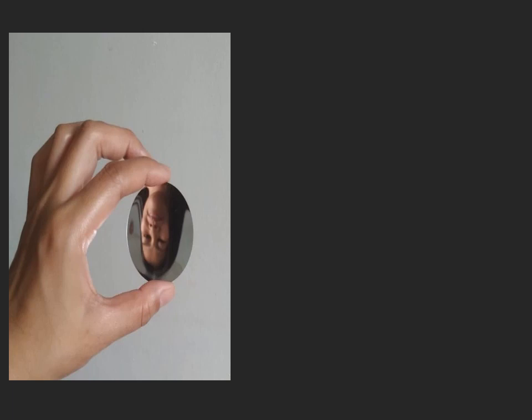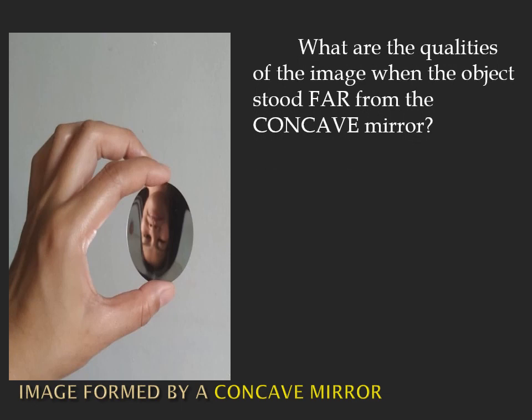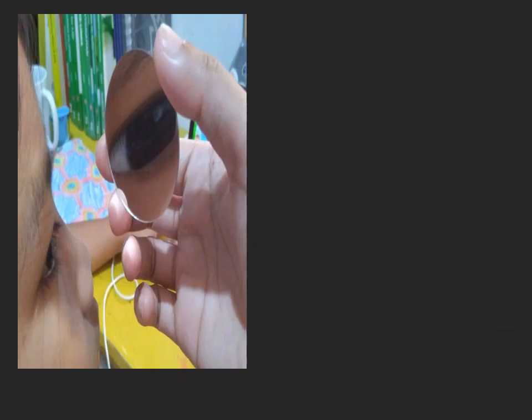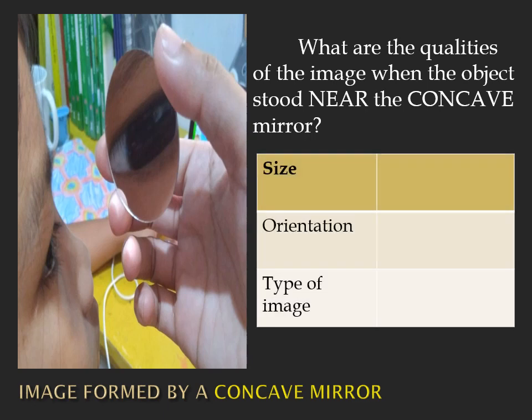Now let's see how images are formed by curved mirrors, starting with the concave mirror. When an object is placed far from a concave mirror, the size is reduced, the image is inverted, and therefore the type of image is real. But when the concave mirror is placed near the object, the size is enlarged, the orientation is upright, and the type of image is virtual.